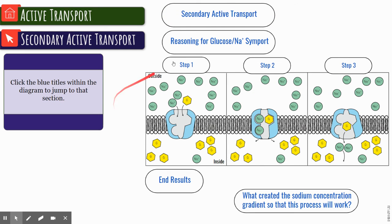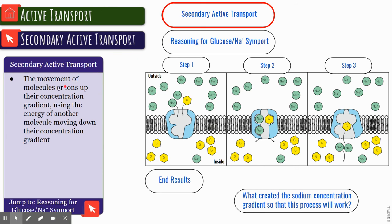Now let's talk about secondary active transport. This is the movement of molecules or ions up their concentration gradient using the energy from another molecule. In this case we're not going to use ATP, we're going to use the power of diffusion in one direction to kind of pump out at the same time the other molecule.